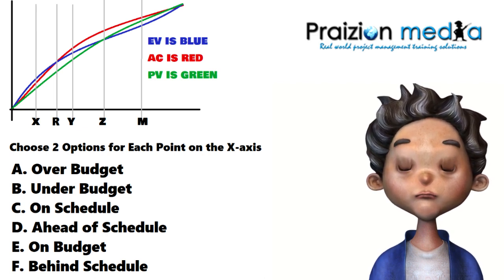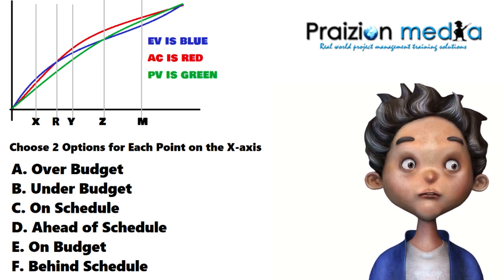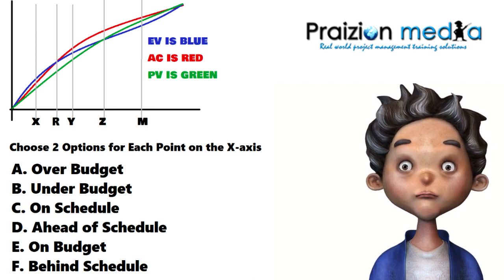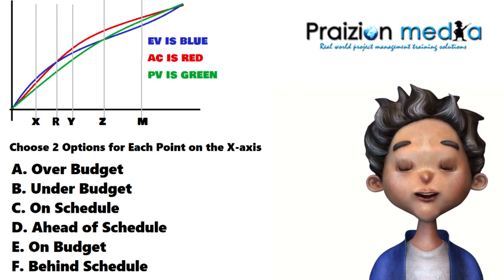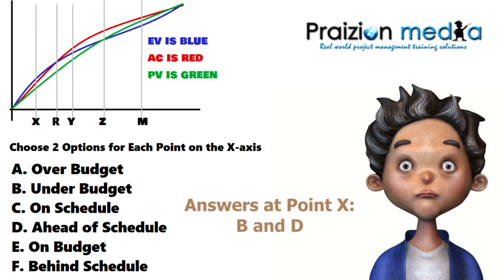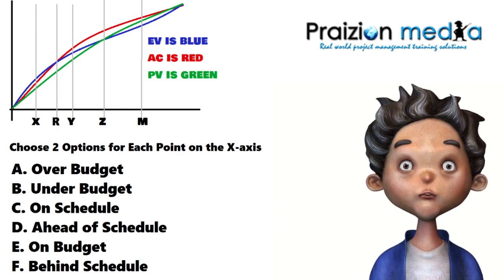Let's talk about our next question here — point X. At point X, you can see that the earned value line is above both the actual cost line and the planned value line. So earned value is in a favorable position. For that reason, we choose both of the favorable options: you're under budget and you're ahead of schedule. I'm hoping you chose option B and option D — under budget and ahead of schedule — for point X.